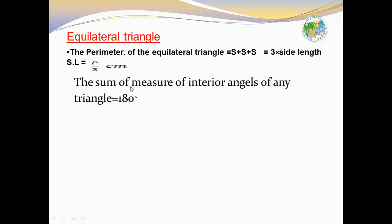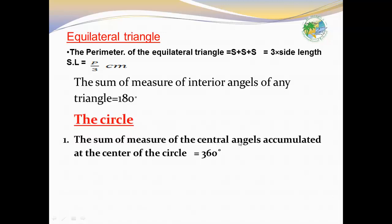The sum of the interior angles of any triangle equals 180 degrees. For the circle, the sum of the central angles accumulated at the center of a circle equals 360 degrees.